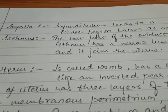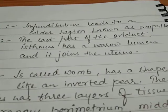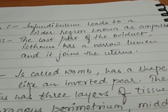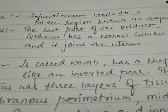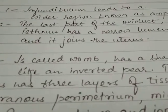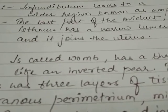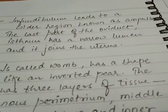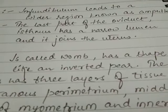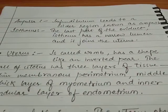Next, we have the uterus. Uterus is also known as the womb — the place where the embryo or zygote develops after fertilization until the parturition process. Parturition refers to the delivery of the embryo. The shape of the uterus is that of an inverted pear, and it comprises three layers of tissue.